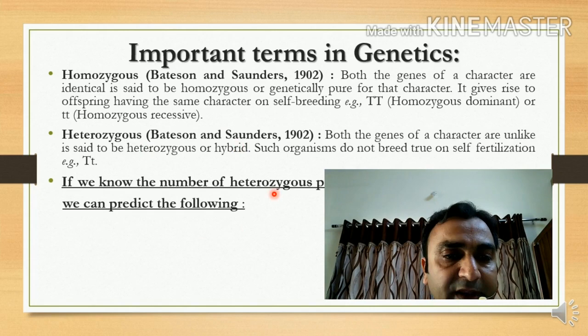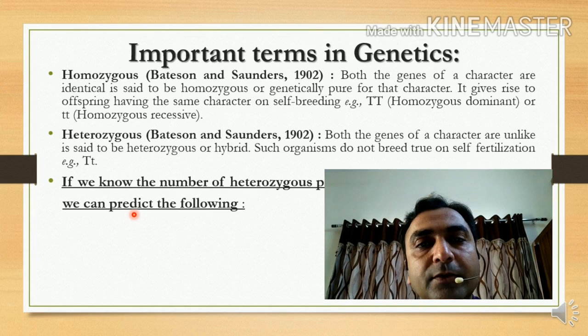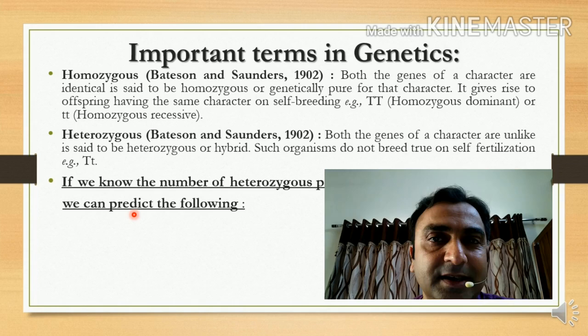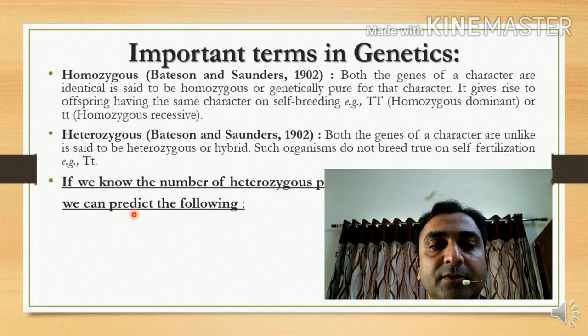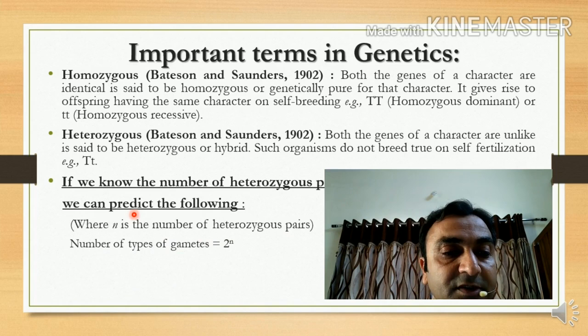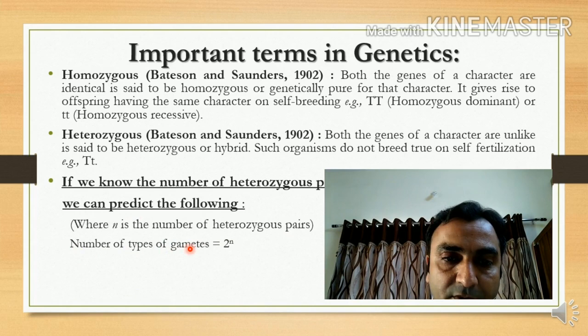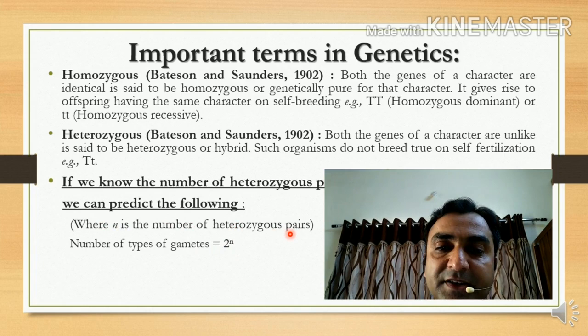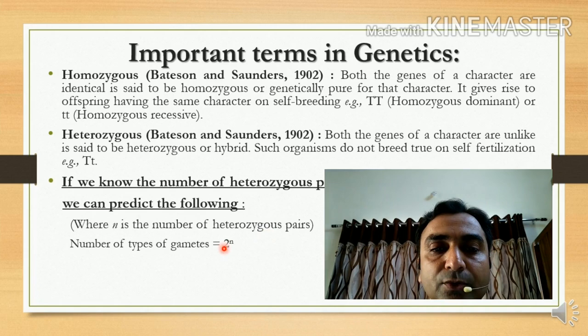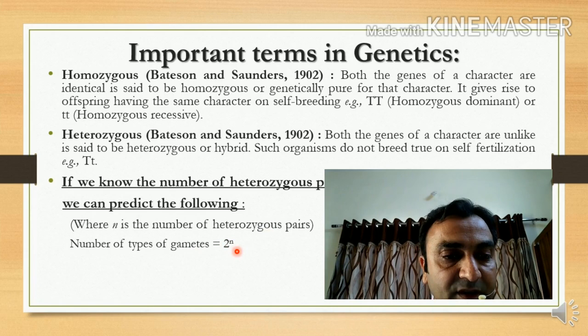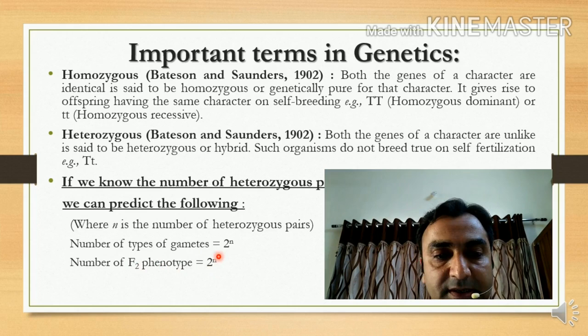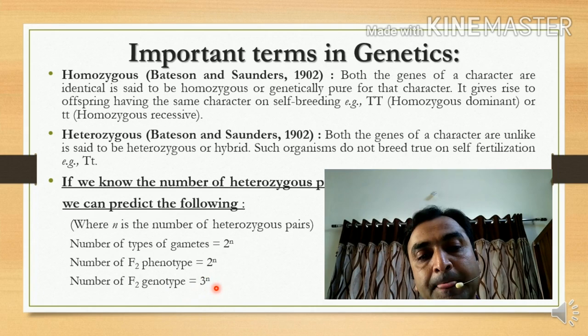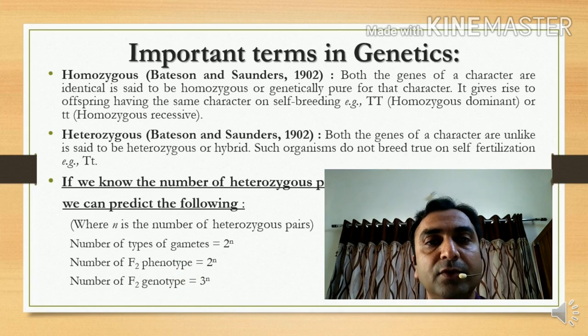If we know the number of heterozygous pairs, we can predict outcomes — useful for solving genetics problems in exams or competitions. The number of types of gametes produced is 2 raised to n, where n is the number of heterozygous pairs. If n equals 2, then 2 raised to 2 equals 4 gametes will be produced. Similarly, the number of phenotypes is also 2 raised to n, and the number of genotypes is 3 raised to n.